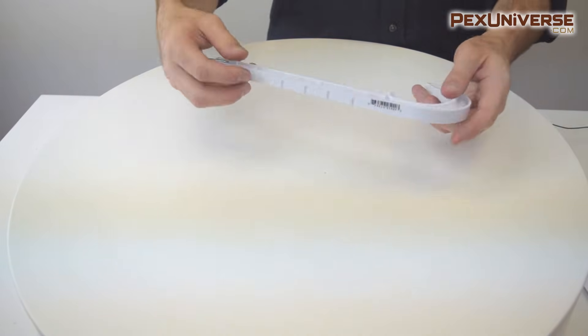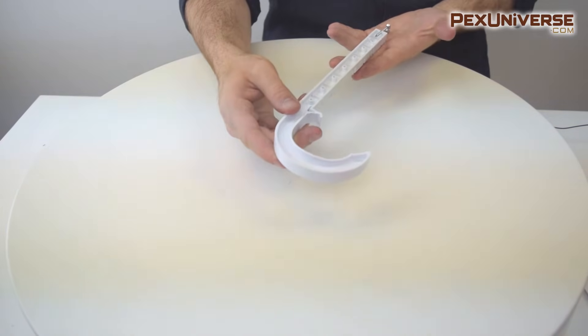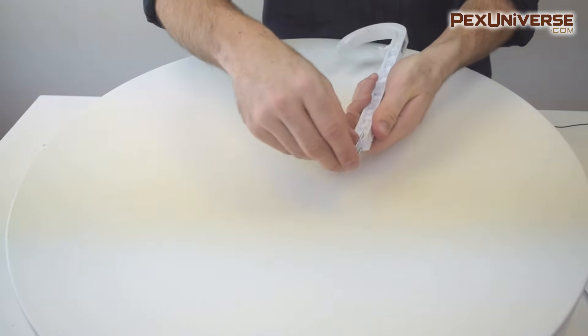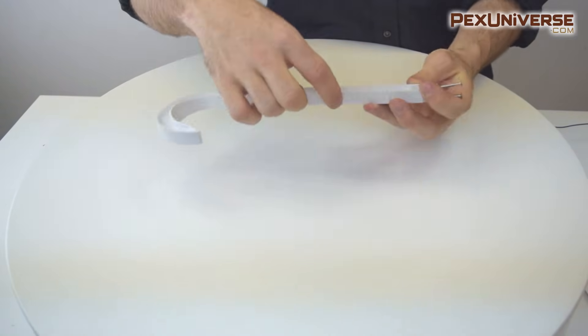J hooks are used to suspend horizontal runs of DWV and Schedule 40 PVC from wooden beams. Each of these comes with two nails so you can take them off and nail them through any of these holes to secure the J hook.